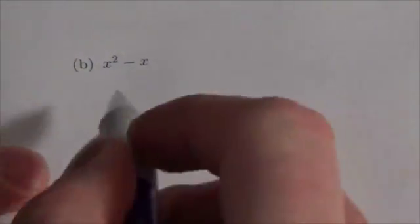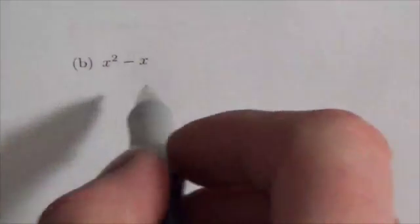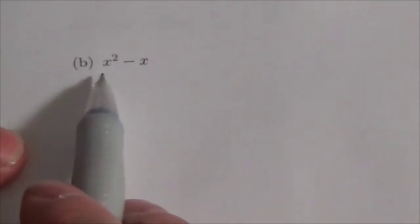Okay, the factoring review, letter B here, 1B. Again, the very first thing I need to do here is look for common factors.